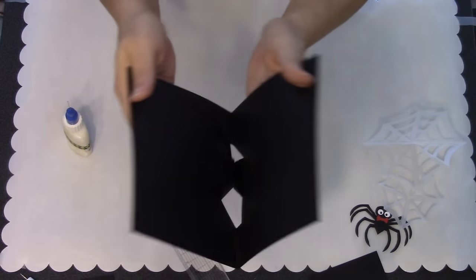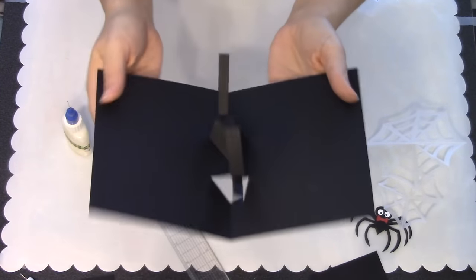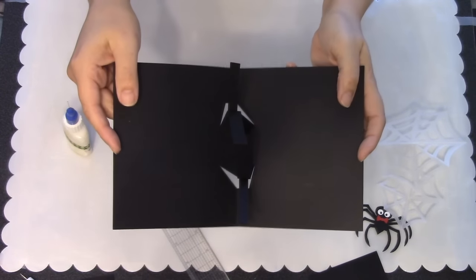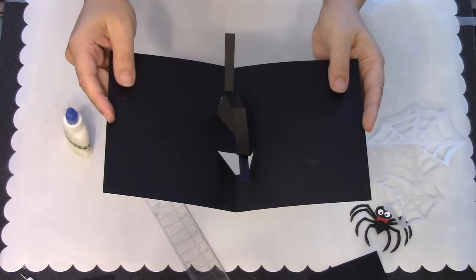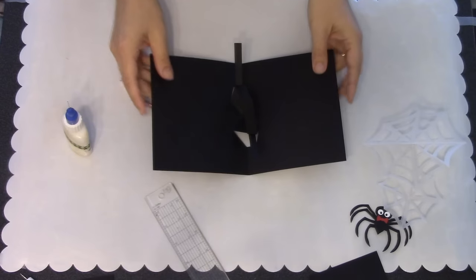I'm going to use the spider webs that I cut. But you could definitely start thinking about maybe putting some circles in there or some squares. All sorts of things that you could do to decorate inside those W's.